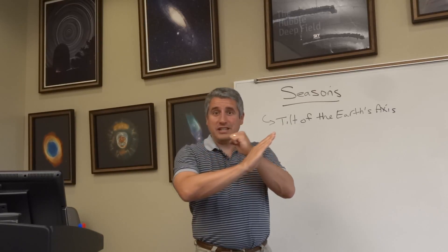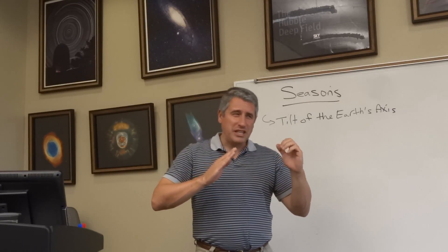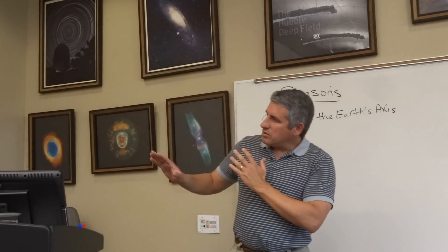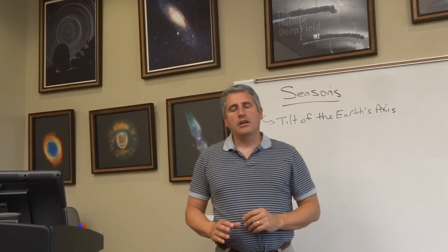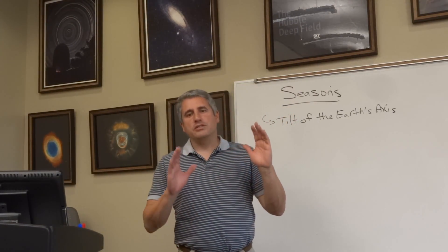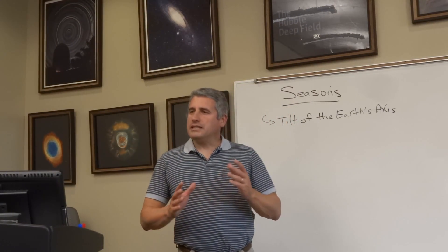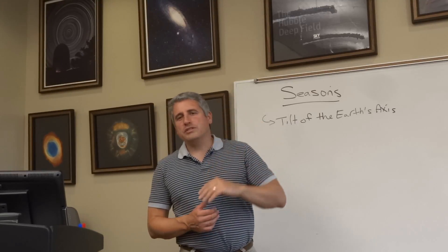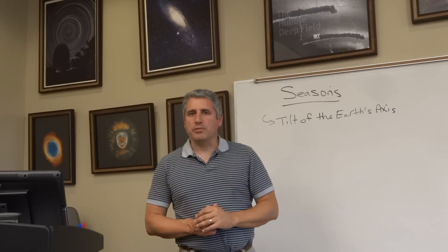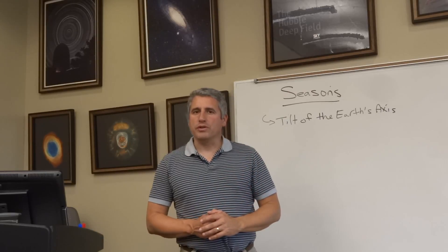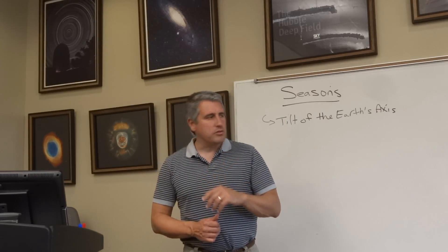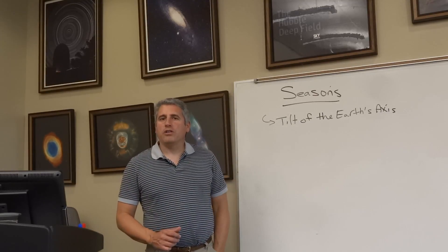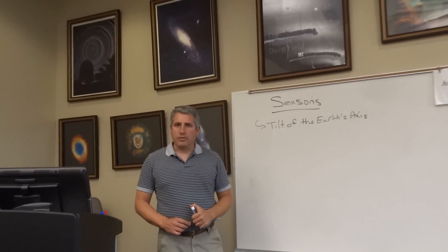If the sun is high in the summer, we're leaning in towards the sun. It's low in the winter — we're leaning away from the sun by 23.5 degrees during each season. That tells us that the sun varies approximately 47 degrees from its highest point in the summer to its lowest point in the winter. We mark those positions on the Earth's orbit around the sun by calling them solstices and equinoxes.